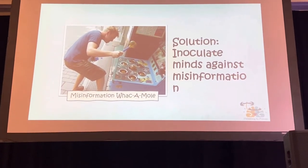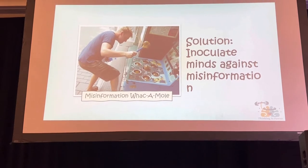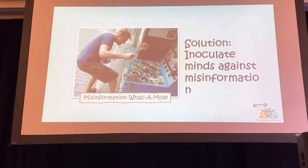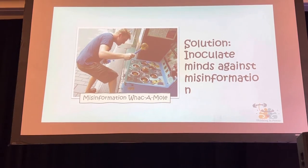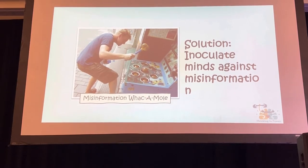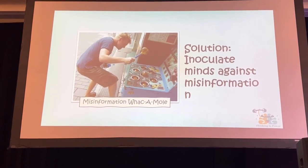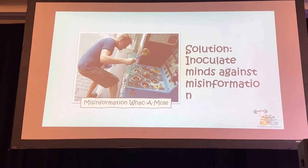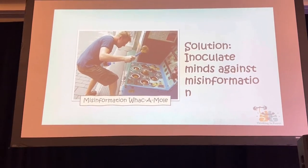If we try to debunk every claim as it pops up, that will probably be impossible, because there's always going to be a new form of pseudoscience. Inoculation theory was first proposed by William McGuire in the 1960s. The idea is, like a vaccine, it exposes the body to a bit of a pathogen so the body can build resistance. Inoculation theory exposes the mind to a bit of misinformation so the mind can build resistance against it.